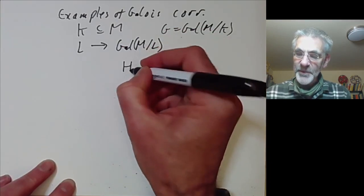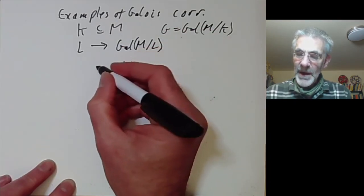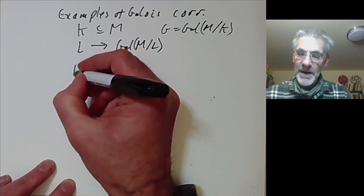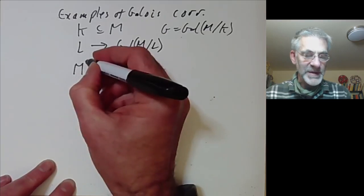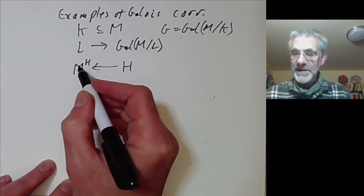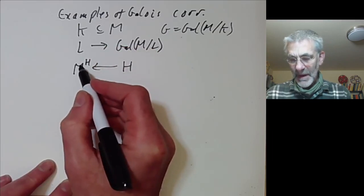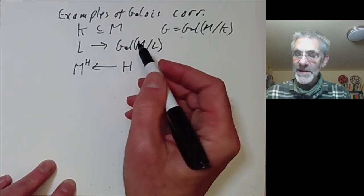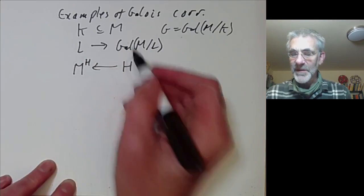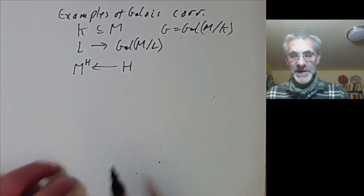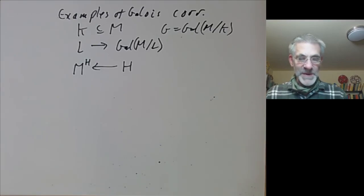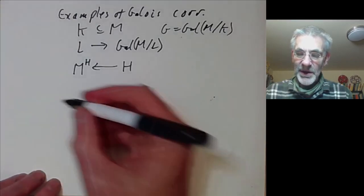On the other hand, if we have a subgroup of the Galois group H, the field corresponding to it is the set of elements of M fixed by H. In the next lecture we will show that these correspondences are bijections, but in this lecture we are just going to work out several examples to see what's going on.